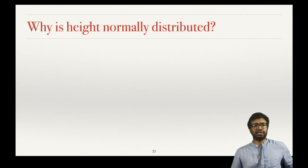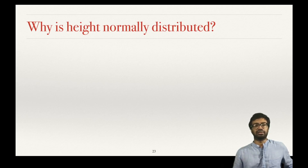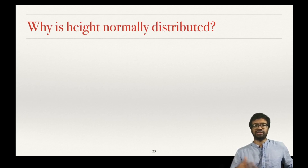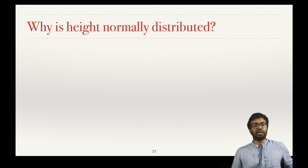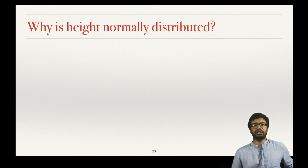We are still puzzled by this question: why is height normally distributed among humans? Let us consider either male height or female height in a place — it is going to be normally distributed. Why is this happening? That has been puzzling many people, because it is a surprising fact.